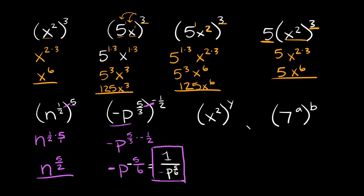A couple more examples with variables in the exponents — don't let that throw you off, it's still the same process. We have x squared in parentheses raised to the y. The base is x, and you just multiply the exponents together: 2 times y equals 2y. That's as simplified as we can make it, so your final answer is x raised to the 2y.